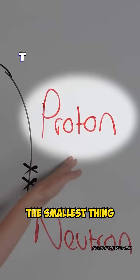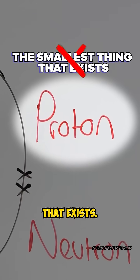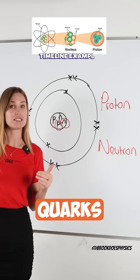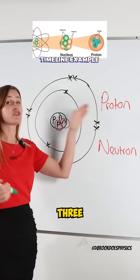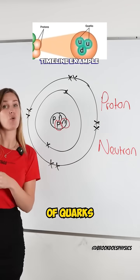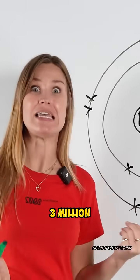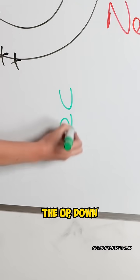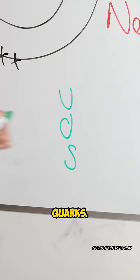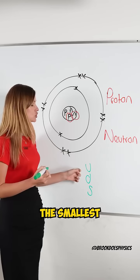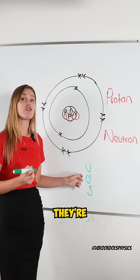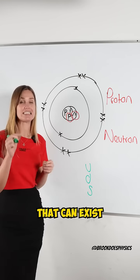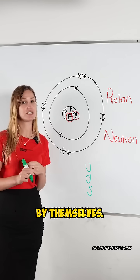A proton is actually not the smallest thing that exists. It's actually made of quarks, and there are three different types of quarks anyway. They're called the up, down, and strange quarks, and these are the smallest things — they're fundamental particles because they're the smallest things that can exist by themselves.